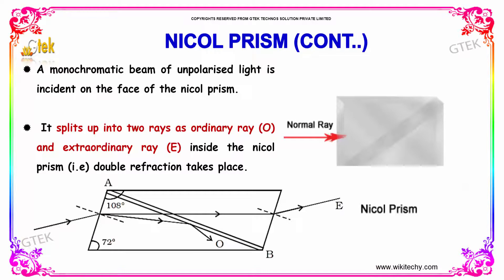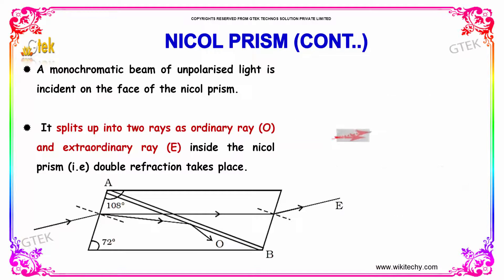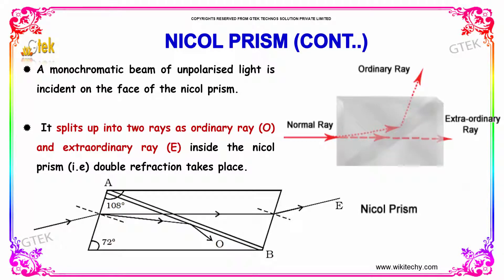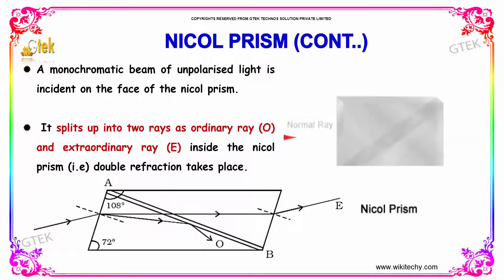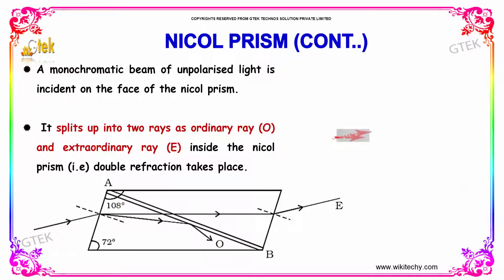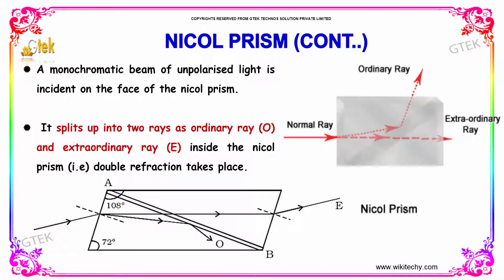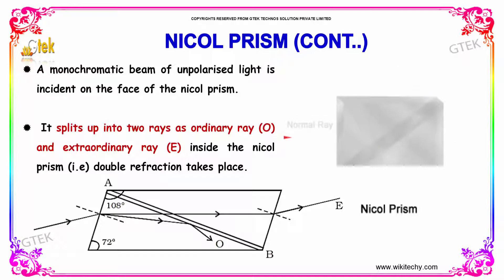A monochromatic beam of unpolarized light is incident on the face of the Nicol prism. It splits into two rays — one is the ordinary ray and the other is the extraordinary ray inside the Nicol prism. Therefore, double refraction is taking place.